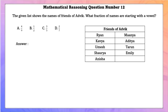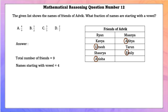Mathematical reasoning question number 12. The given list shows the names of friends of Advik. Which fraction of names are starting with a vowel? Total number of friends is 9, and the names starting with a vowel is 4. So the fraction is 4 by 9.